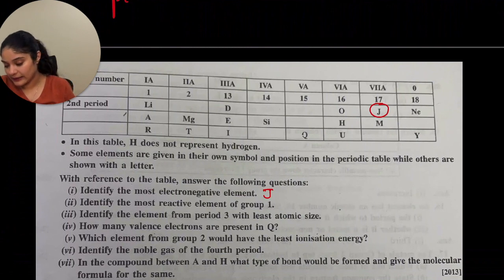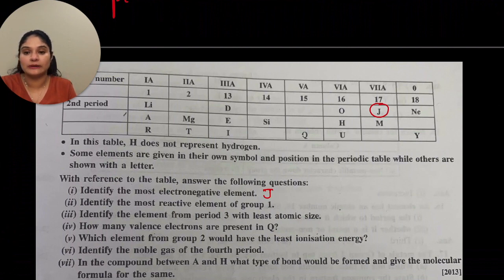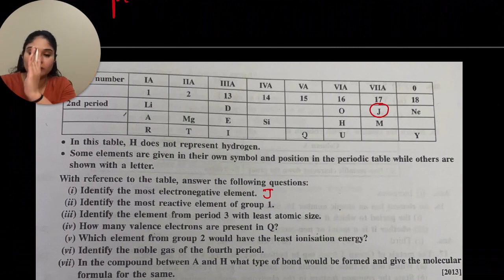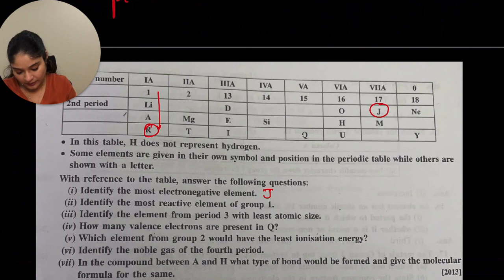Identify the most reactive element of group 1. In group 1, reactivity increases as you come down the group. As you come down in the first group, R is the most reactive element.